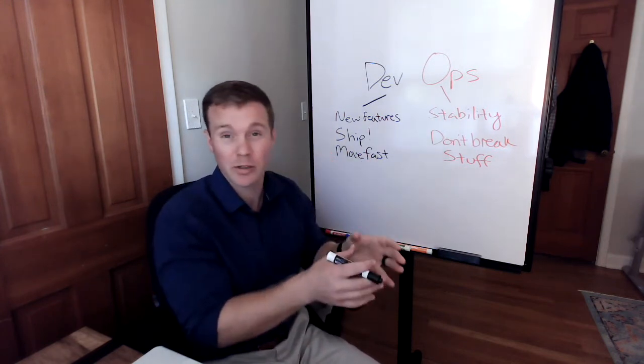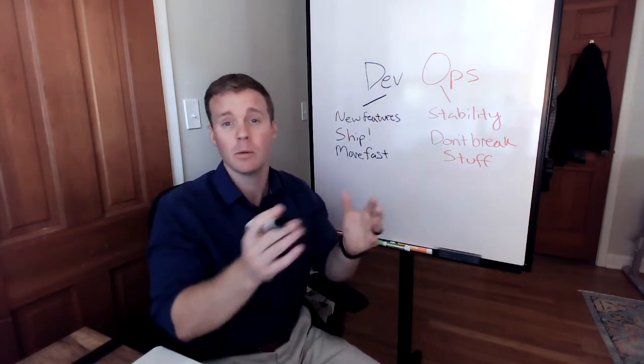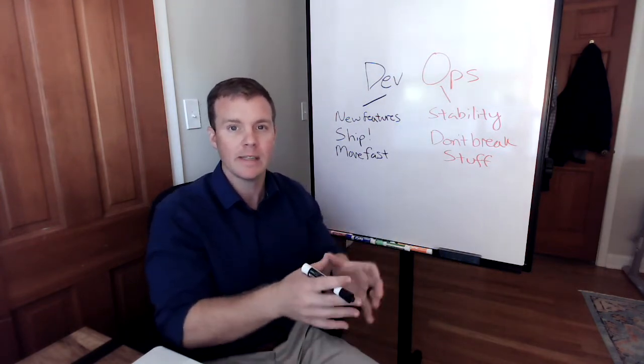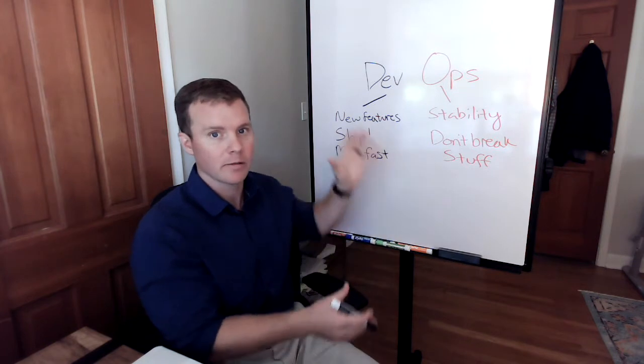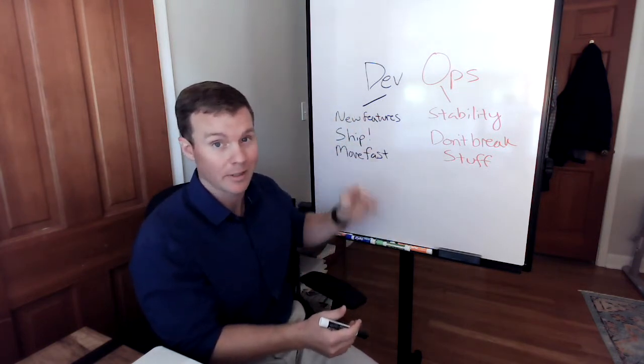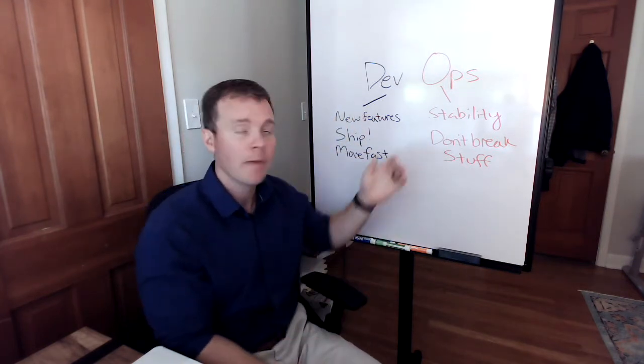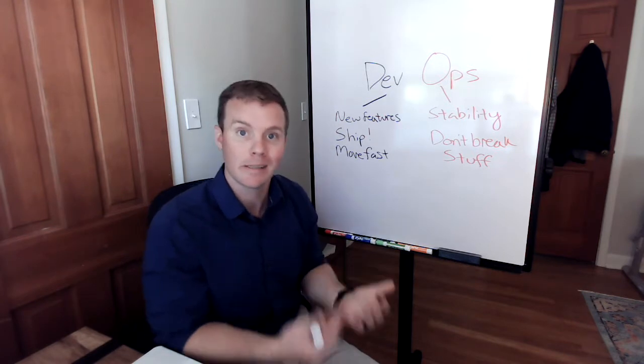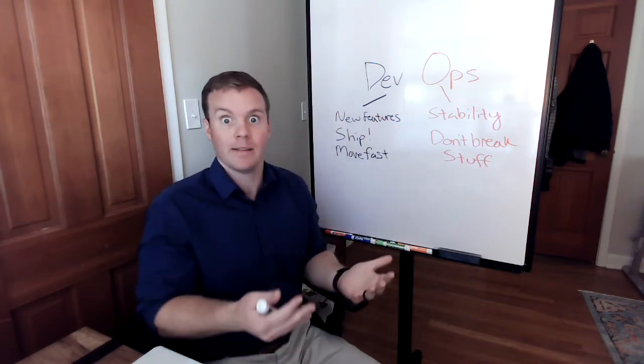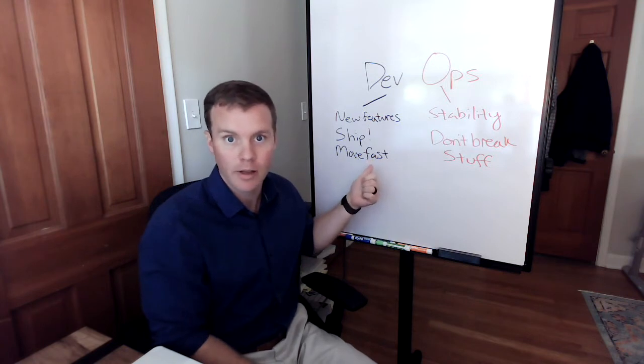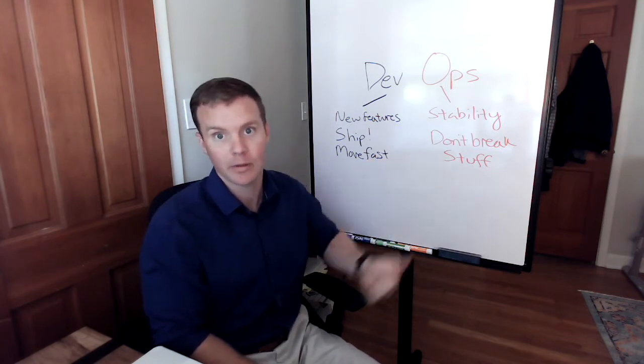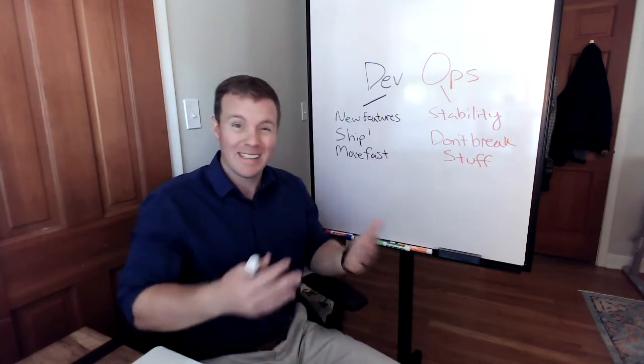And again, this could be just one person doing both things. It could be two different teams, it could be multiple teams. But this is the concept of DevOps: you've got developers who need to build stuff because that's how they get paid, and operations people who need to keep things stable. And as a business, of course, you need both. We need new features to help users and we need stability to help users as well.